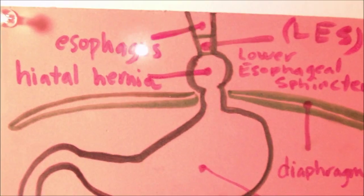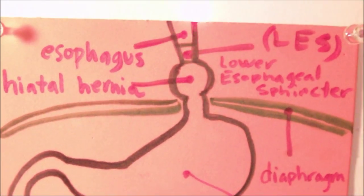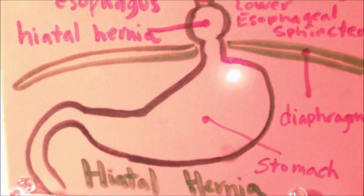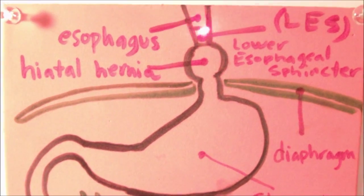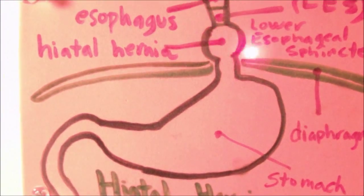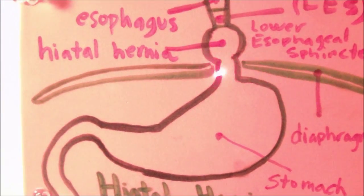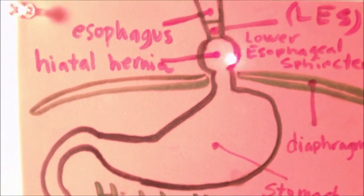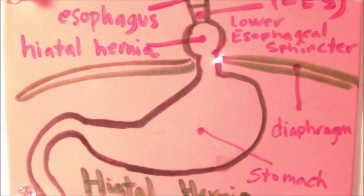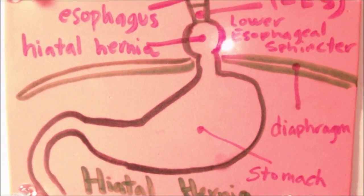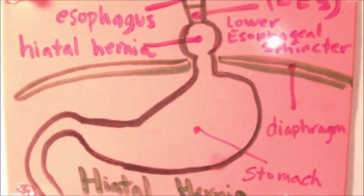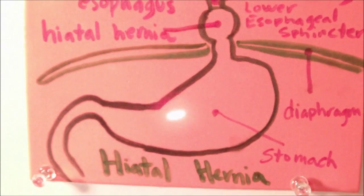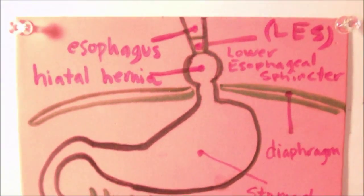So this is basically very similar to GERD, in which with GERD there's a weakness within the esophageal sphincter which causes the gastric contents to reflux or go back up to the esophagus. With hiatal hernia, it's the cardiac sphincter that loses part of its functionability and causes the reflux of gastric contents back up into the esophagus.